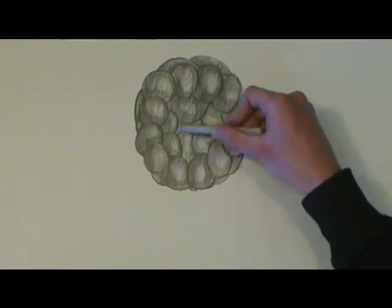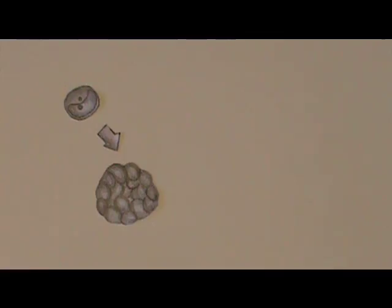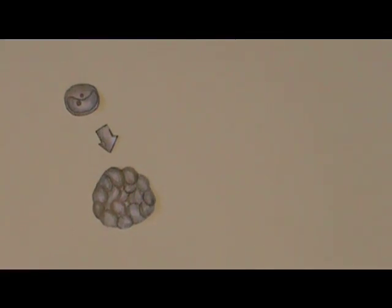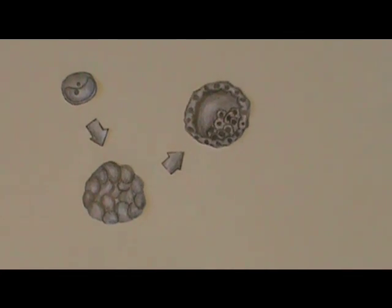To find these cells, we will have to look in what is called the blastocyst. In the three to five day old embryo, called a blastocyst, the inner cells will give rise to the entire body of the organism.